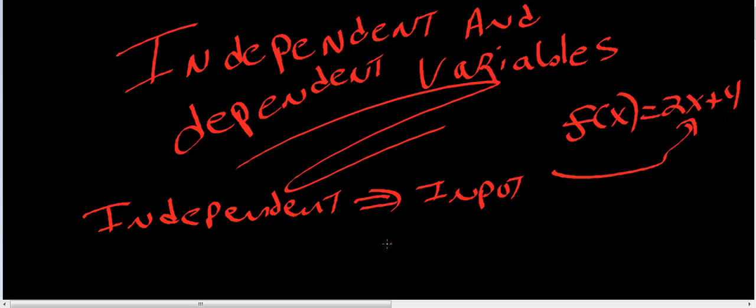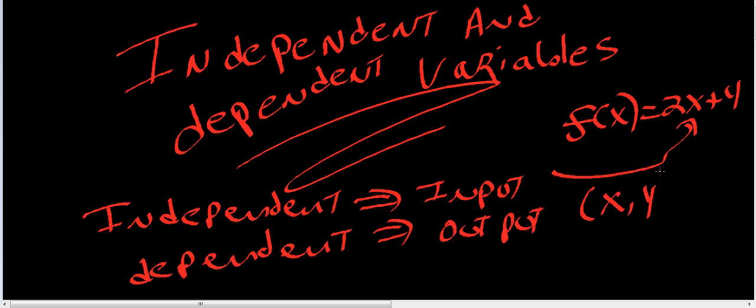Your answer is your output, which is your dependent variable. Dependent is your output. Your x is your input, and your y is your output. So that's kind of the vocabulary. Your input is the independent variable. The output is the dependent variable. The value of the dependent variable depends on whatever your independent variable is.